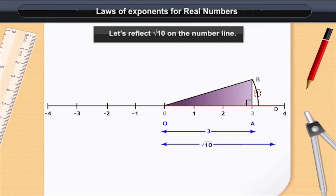So, the square of hypotenuse OB is equal to square of OA plus square of AB. 3 square plus 1 square is equal to 10.